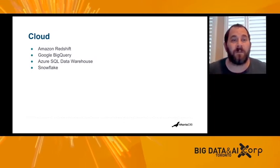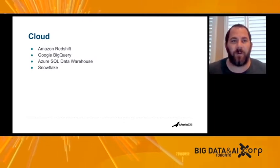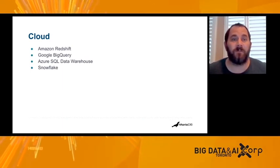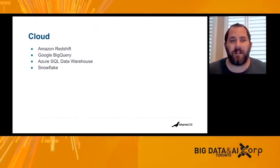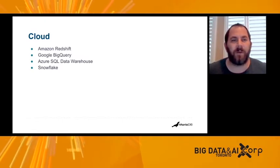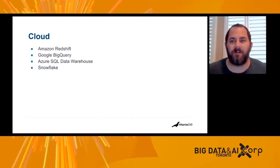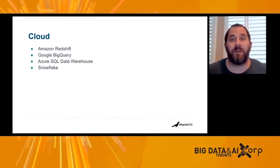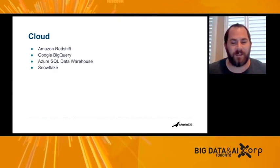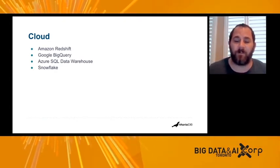And then the cloud came along, which is a big part of what we talk about here. Amazon Redshift, I think, being the most notable — one of the very first cloud data warehouses. We'll talk a little more about Redshift in a minute. But you also have Google BigQuery, Azure SQL Data Warehouse, and Snowflake. We've all just witnessed the success that Snowflake is experiencing with data warehousing in the cloud.